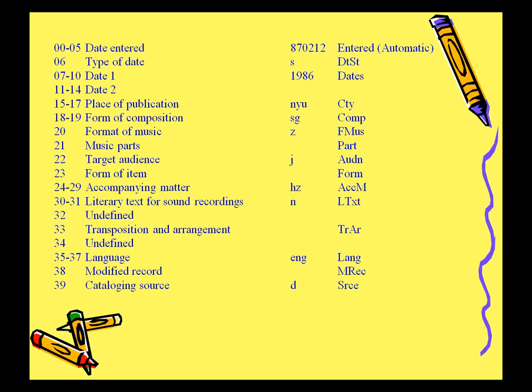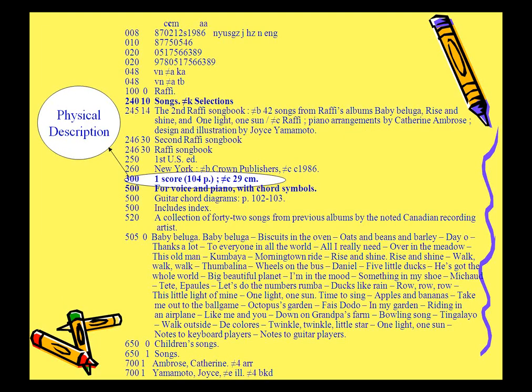The physical description has the extent of the item — one score — with the number of pages in parentheses, and dimensions recorded in subfield C. One general note very helpful for patrons is the 4XX note giving the instruments and/or voices written in the score. This information is also coded in the 048, the number of musical instruments or voice code field. For example, the first 048 shows voice and piano, the second 048 shows voice and guitar. Other note fields include index notes, summary notes, contents notes, and other persons responsible for the work.